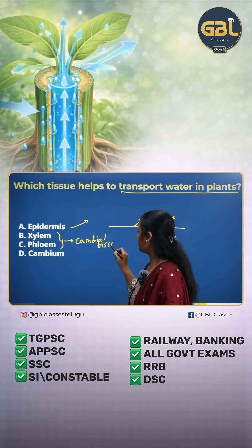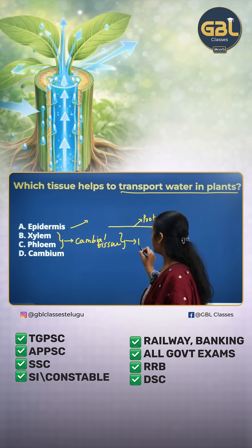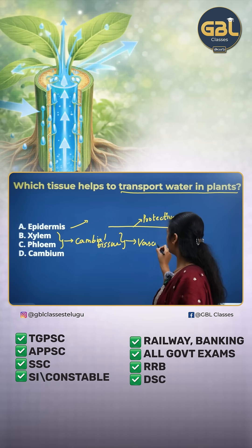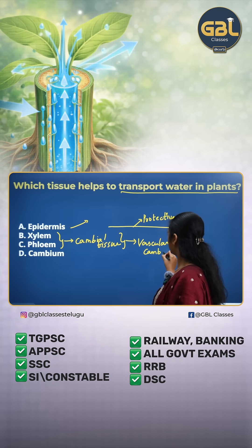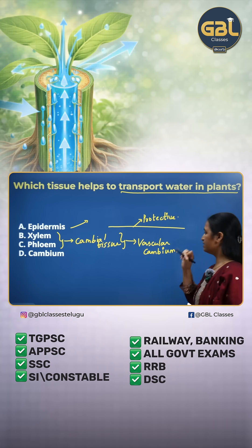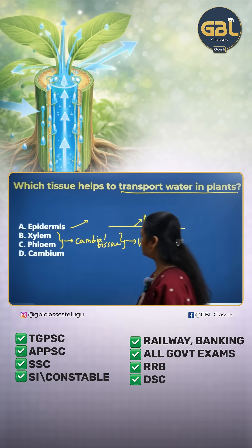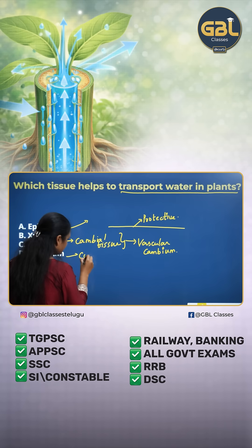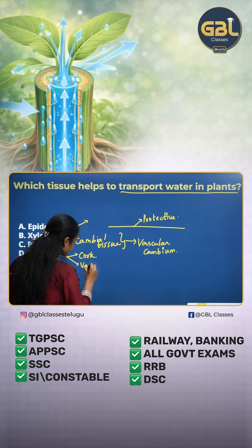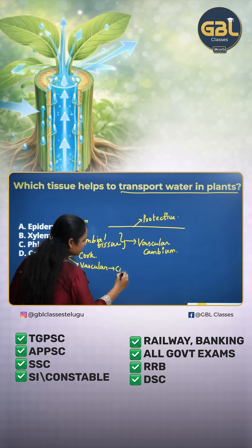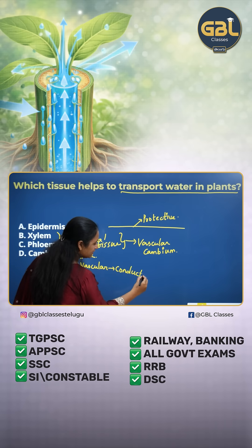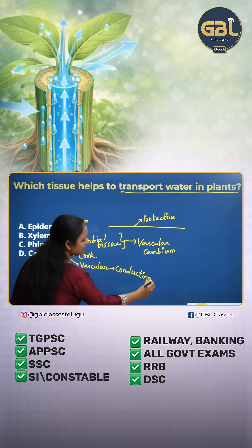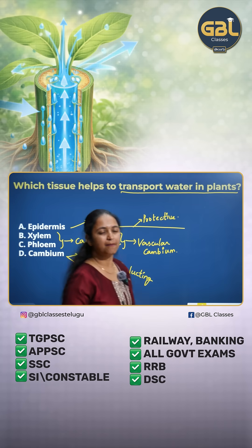This is in turn called vascular cambium. Next, cambium is of two types: the first one is cork cambium and the second one is vascular cambium. Vascular cambiums are also called conducting cells because they help in transport of water and food in plants.